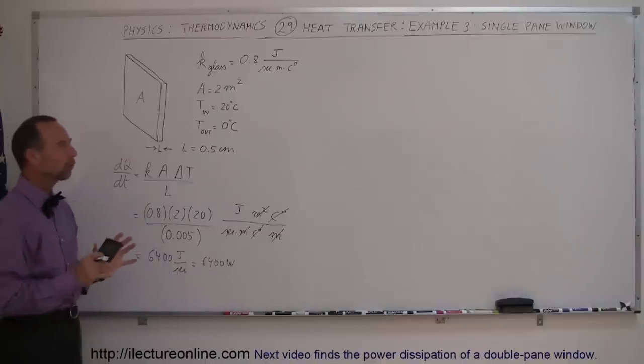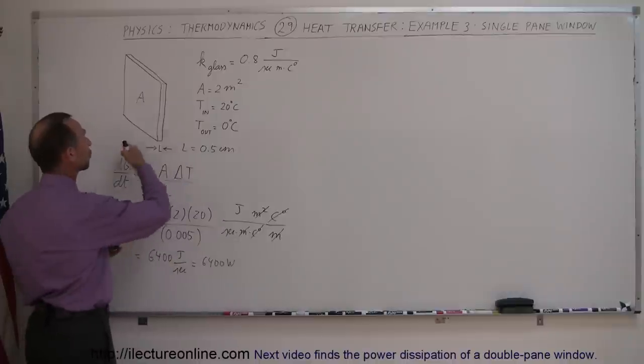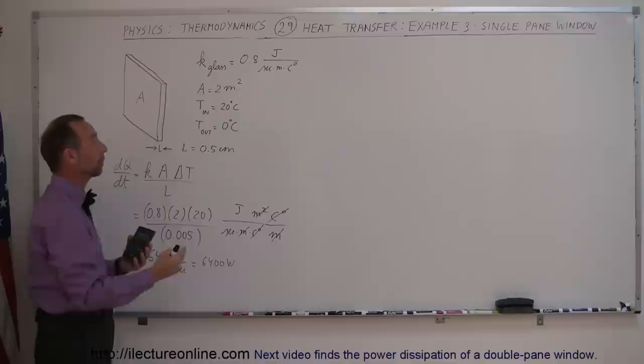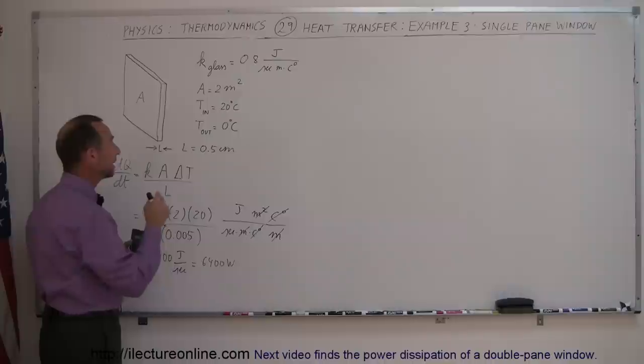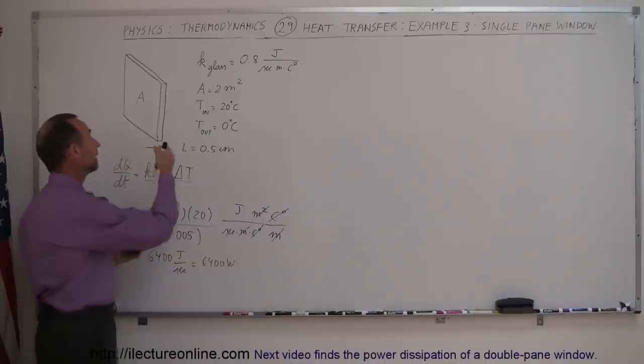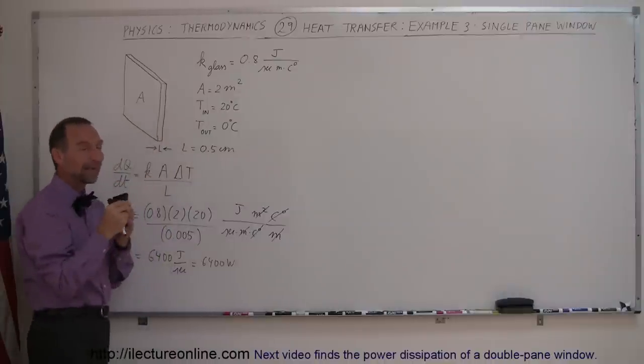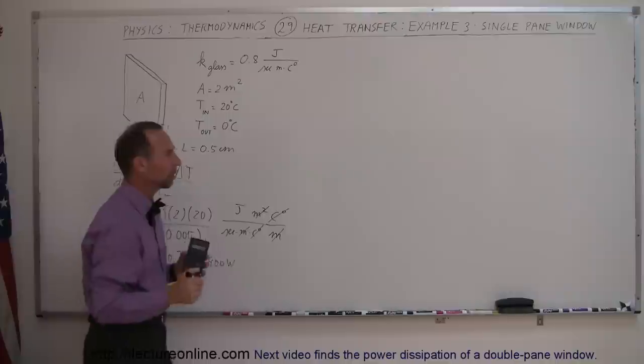This is an oversimplified problem because if the inside temperature is 20 degrees—room temperature—and the outside is 0 degrees—the freezing point of water—the glass itself, the inside and outside surfaces, will not be at those temperatures. Let me explain how that works.